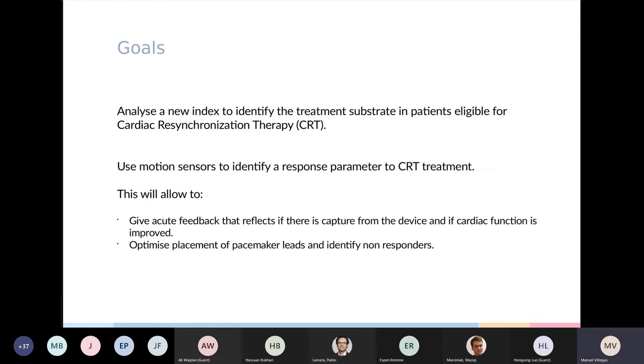With this in mind, the goals of our study are to find a new index that will show acute response to pacing, and for this purpose we use motion sensors, with the hope of finding a reliable index that will give real-time feedback to clinicians during implantation. This will allow them to determine if a patient is a responder and potentially help identify the optimal placement of the pacing leads.